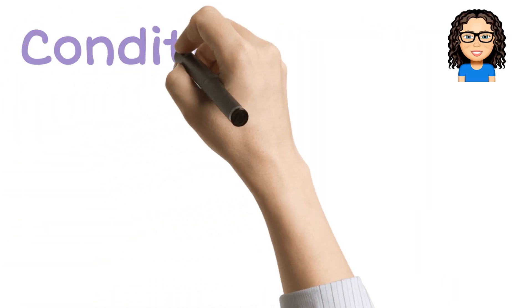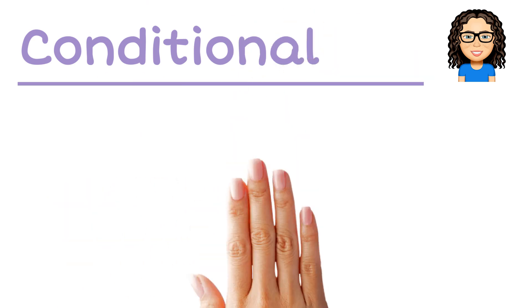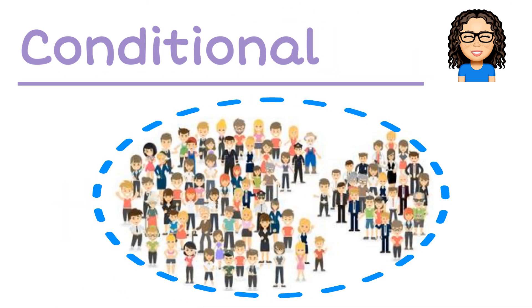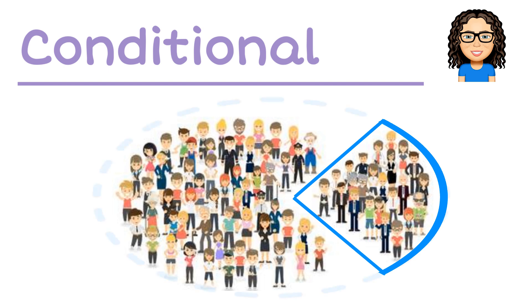When we look at conditional probability, the idea here is that we have a sample of people, a group of people, and we are interested in a particular subgroup of them. Then within that subgroup we want to know the chance of some event occurring.